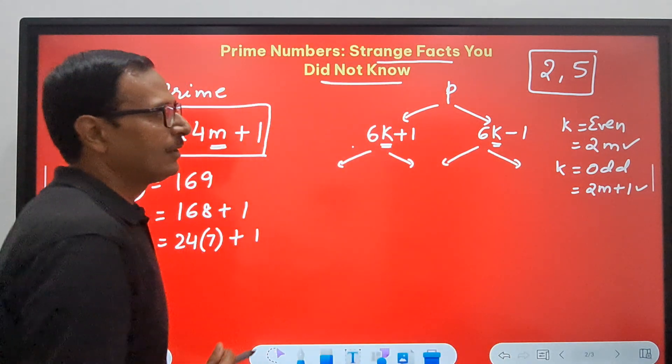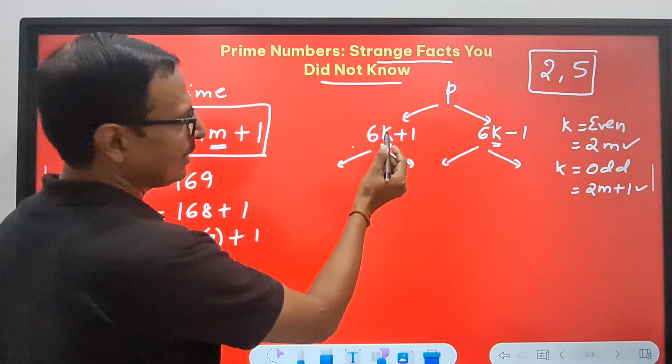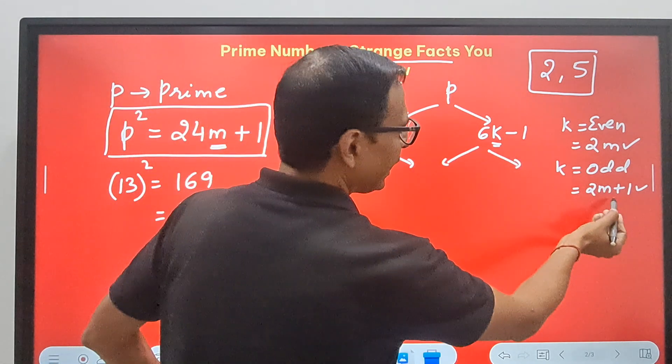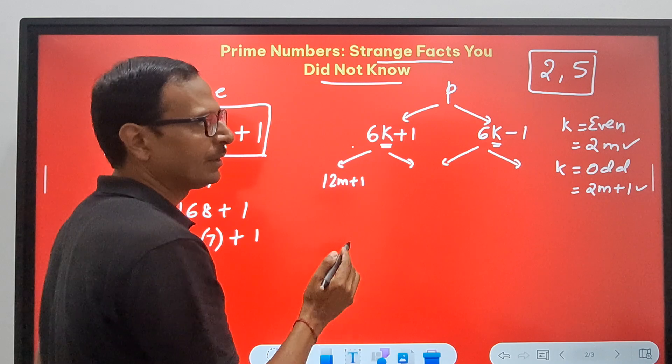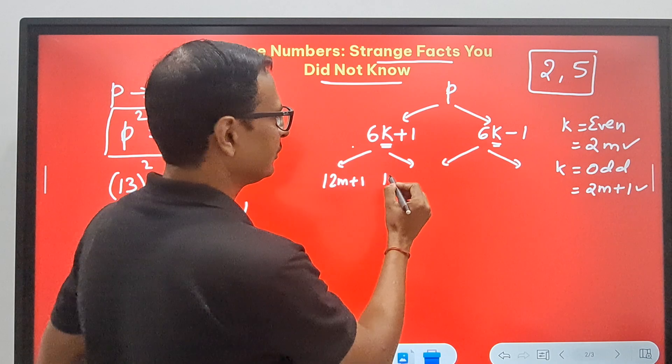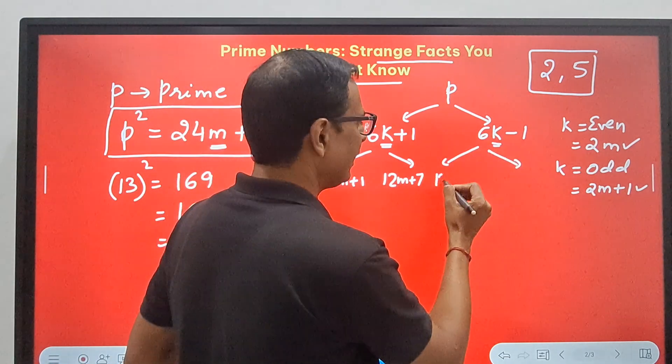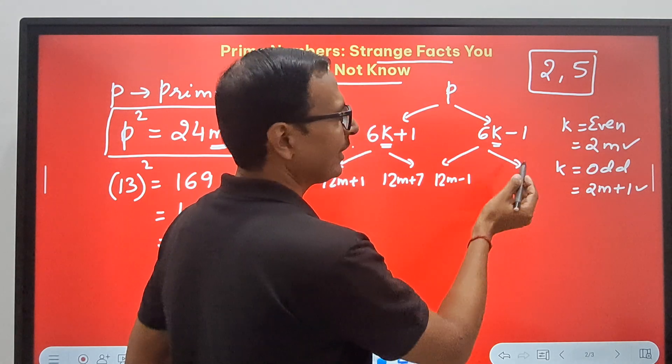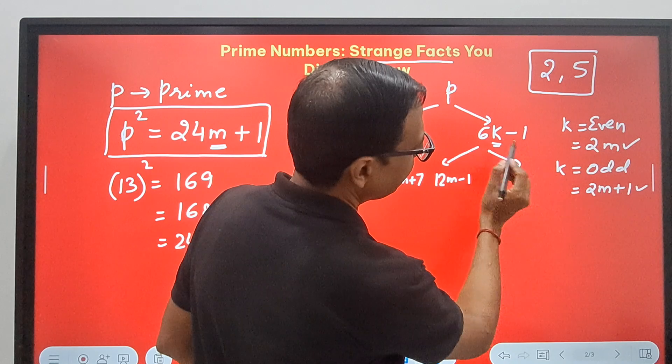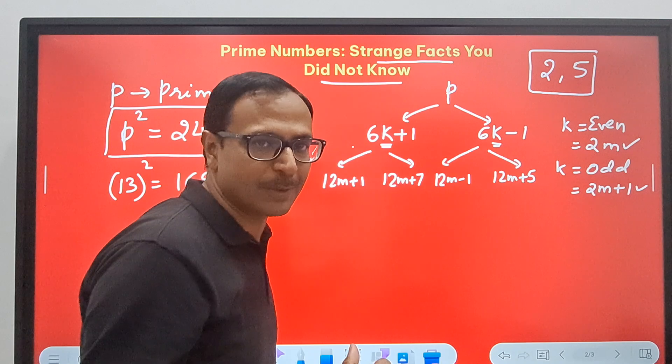So if I put k as 2m, I will get two cases here and two cases here. When I put k equal to 2m here, I will get 12m plus 1. And if I put k equal to 2m plus 1, I will get 12m plus 7. Similarly, when I put 2m here, I will get 12m minus 1, and when I put 2m plus 1 here, I will get 12m plus 5. So these are the various forms in which we can write a prime number.